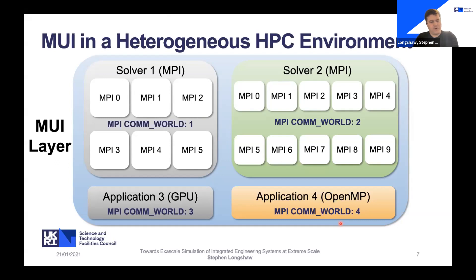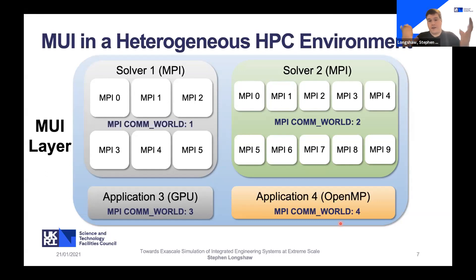This can be challenging with closed industrial codes, but we have found ways around that. For codes that weren't already MPI-parallelized — one using CUDA or OpenACC, the other using OpenMP — MPI is simply embedded via MUI, enabling communication between all of the solvers.